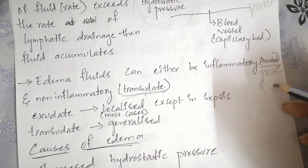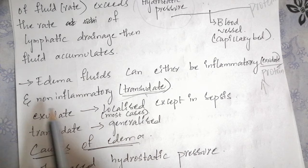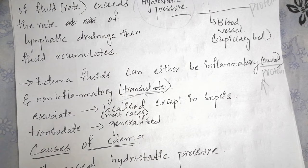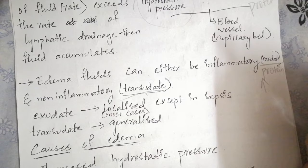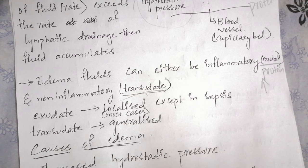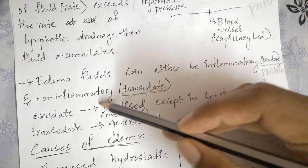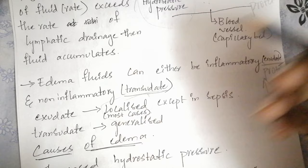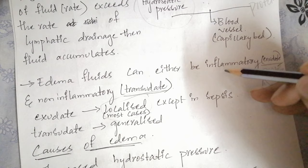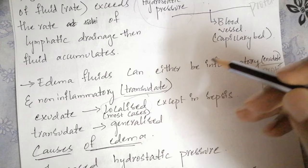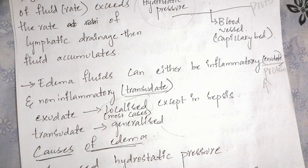Non-inflammatory edema fluid is called transudate. It occurs when hydrostatic pressure exceeds osmotic pressure and does not contain large amounts of protein. Inflammatory exudate is mainly localized to the site of inflammation, though in sepsis it can be generalized. Transudate is mainly generalized, such as in subcutaneous edema, and sepsis is an example of inflammatory exudate-type edema.